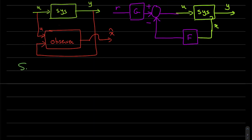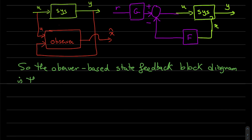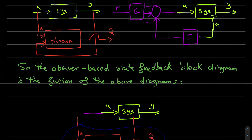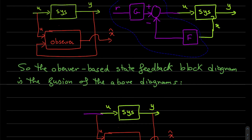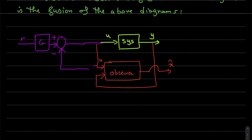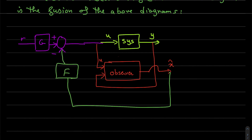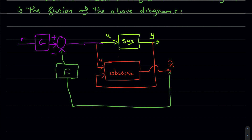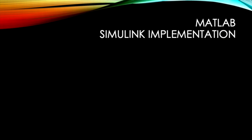For making the block diagram, we have to combine these two block diagrams. First of all, I will take the system with inputs u and y. I will copy the observer, which depends on u and y, and I will copy the state feedback — but instead of using x, I will use x_hat.